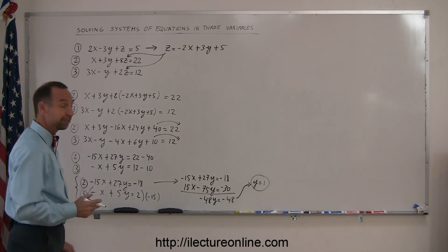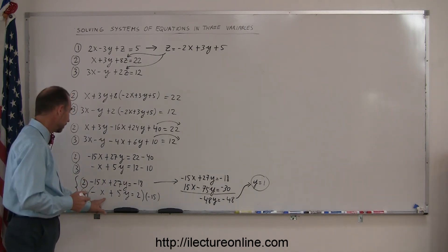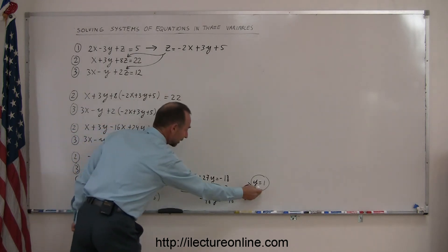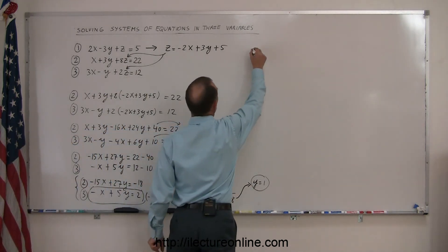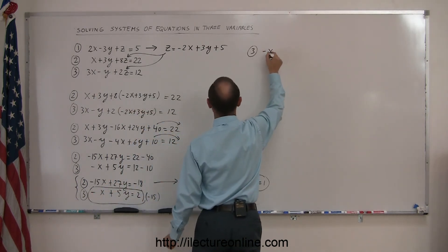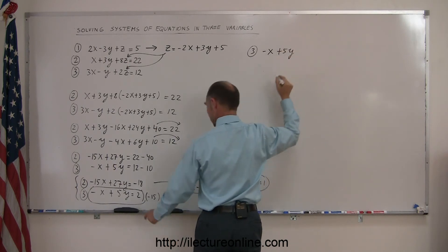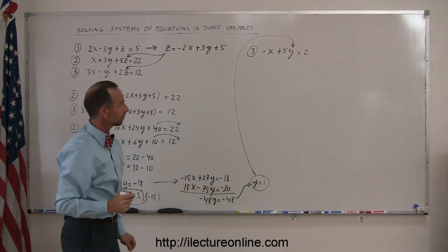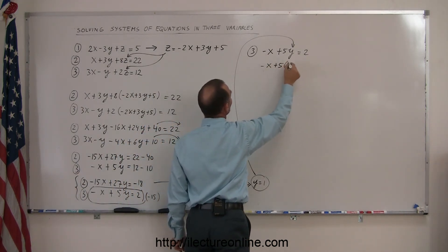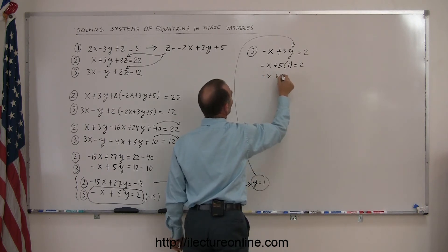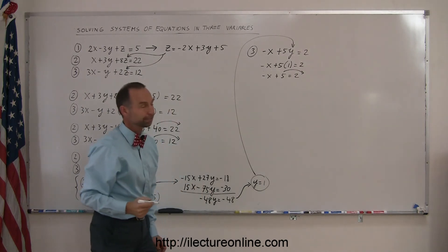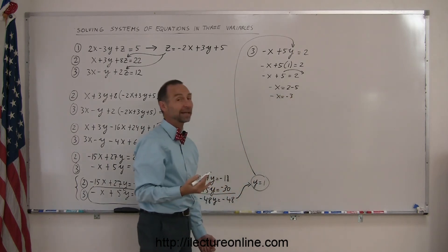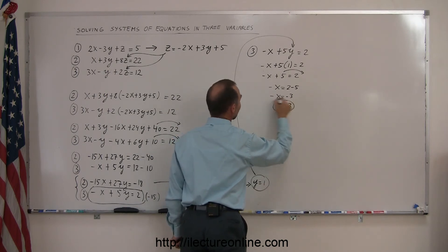It looks like I'm on the right track. Now I need to find x and z. I'll start with x — I'll take one of the two equations and plug in the value for y I just found. Using equation number three: minus x plus 5y equals 2. Plugging in y equals 1: minus x plus 5 times 1 equals 2, so minus x plus 5 equals 2. Bringing the 5 over: minus x equals 2 minus 5, or minus x equals minus 3. Multiplying both sides by negative 1, x equals 3.